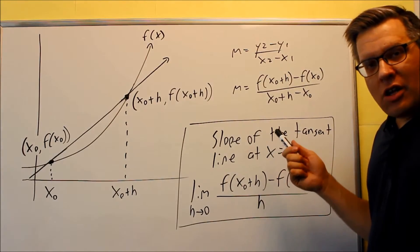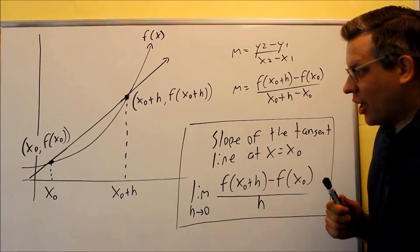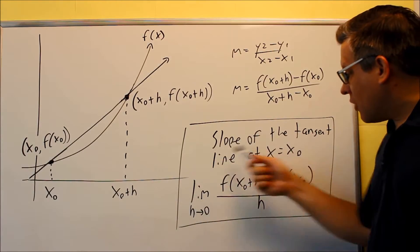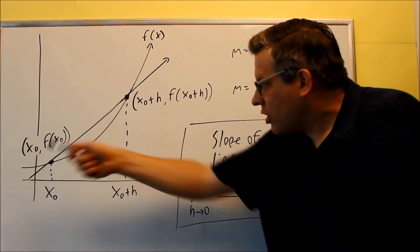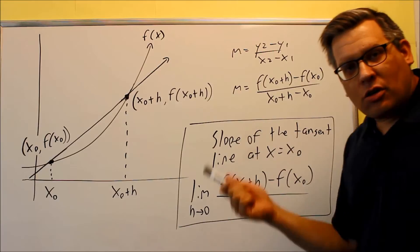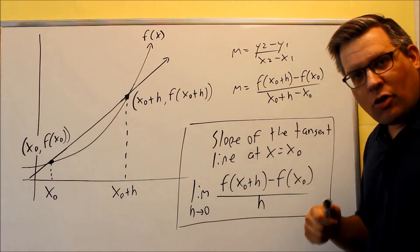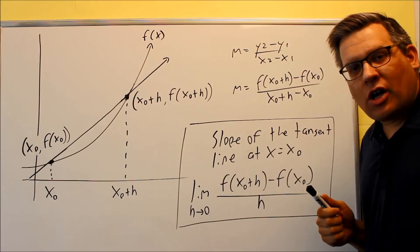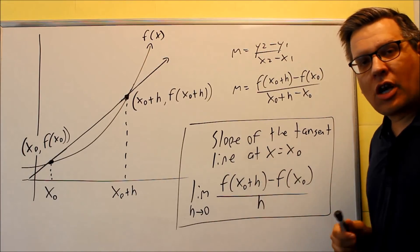So what they're also going to ask you is they may ask you to find the equation of that tangent line. If we have the slope that we get from this point and you have the other one here that it goes through, then we can use point-slope formula in order to figure out the exact equation of that line, and so we'll show that here with a couple of examples.